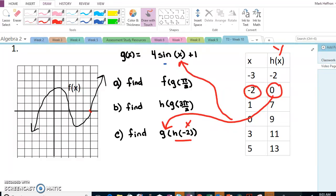Well, here's g. So 0 in for x, sine of 0 is 0, times 4 is 0, plus 1 is my final answer.